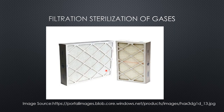High Efficiency Particulate Air filters — HEPA filters — can remove up to 99.997% of particles greater than 0.3 micrometer in diameter, and they act as depth filters. Their efficiency for removing microorganisms is very high since major microorganisms are associated with dust particles, and HEPA filters trap dust particles as well as fungal spores. Air is forced through HEPA filters by blower fans, and pre-filters are used before the HEPA filters to remove larger dust particles and extend the life of HEPA filters.